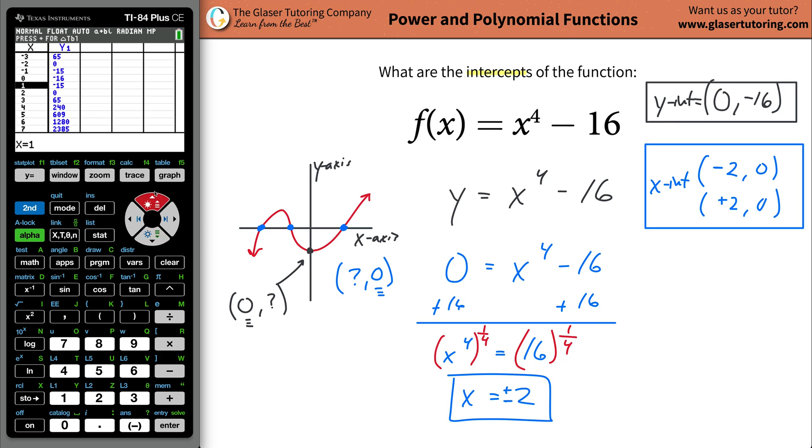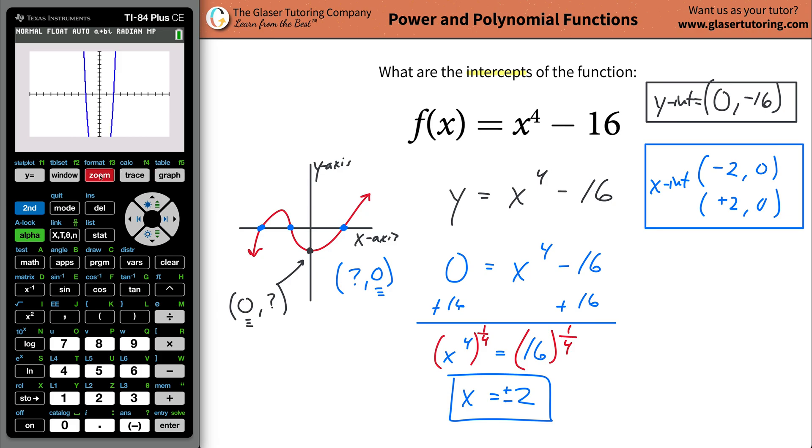Now, what happens when x is 0? Look, y is the negative 16. That's what we said over here. Those are all the intercepts. This is kind of what the graph looks like. I'd have to fiddle with the zoom to really get a better picture. But hopefully, you get the idea. Guys, thanks so very much for tuning in. I really do appreciate it. I hope this video helps. And if it did, give us a hand. Like, subscribe, tell your friends. And if you're ever in need of a one-on-one tutoring, I'd be happy to help you. Take care.